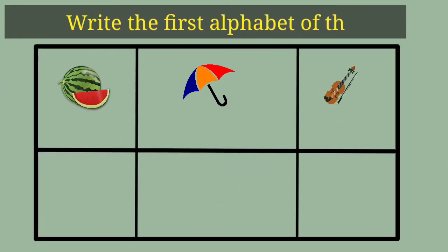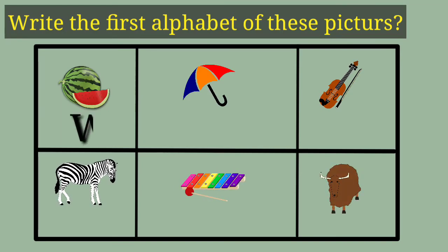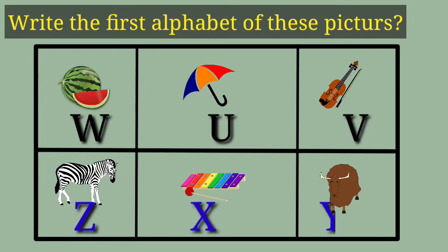Write the first alphabet of this picture. Watermelon, W. Umbrella, U. Violin, V. Zebra, Z. Xylophone, X. Y, Yak.